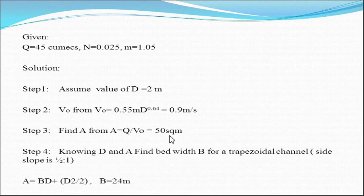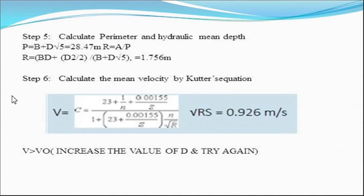Step three: Area = Q / V₀. Since discharge and velocity are known, calculate the area. Then, knowing d and area, find the base width b of the trapezoidal channel using A = b×d + d²/2. Step five: calculate the perimeter and hydraulic mean depth using the standard equations. Finally, step six: calculate the mean velocity using Kutter's equation, which gives approximately 0.926 m/s.